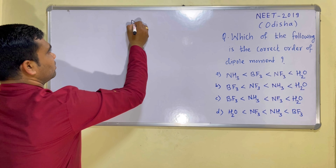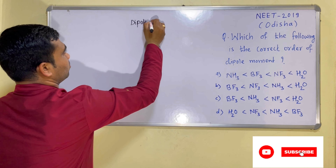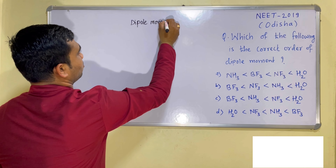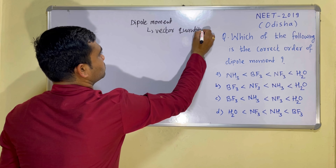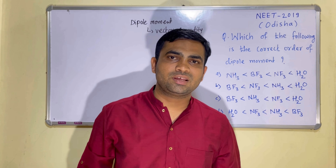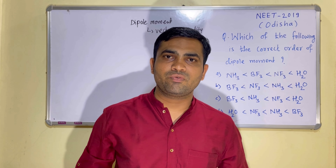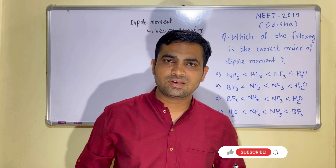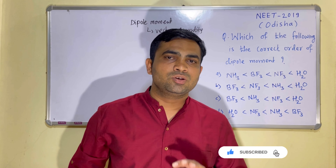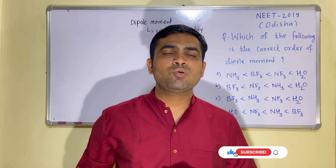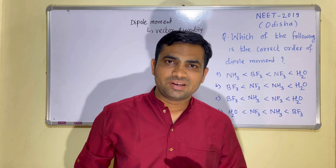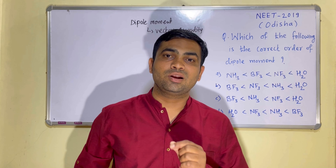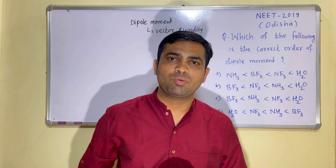Dipole moment is a vector quantity, and it follows the laws of addition of vectors. There are different laws like triangle law and parallelogram law of vector addition. We will discuss how these vectors lie and towards which atom. The dipole moment vector always lies towards the electronegative atom, and if there is a lone pair, it lies towards the orientation of the lone pair.